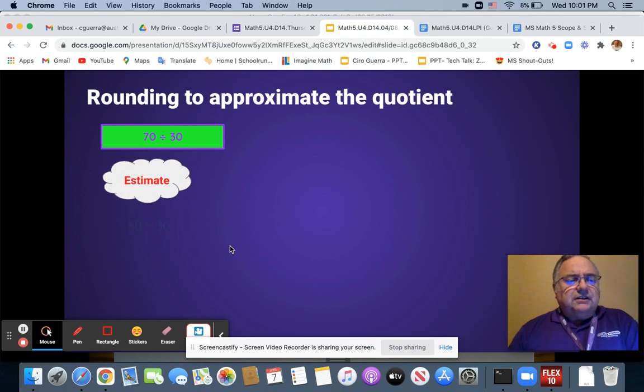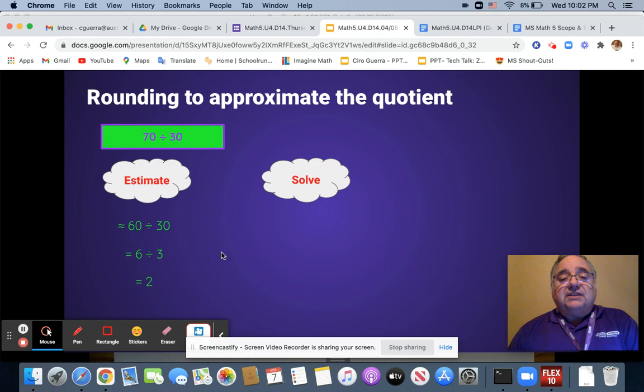So we're going to estimate it first. I got the estimate of approximately 60 divided by 30. Reduce it by dividing by 10. Scratch out the 0s. That gives me 2.